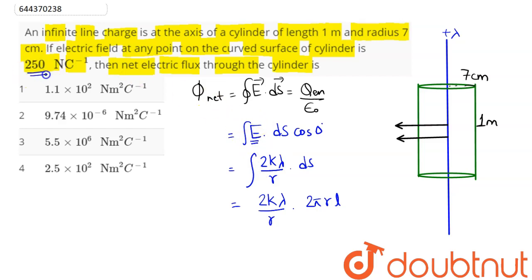This electric field is given, we need to find the net flux. So, this 2k lambda by r value is 250 into 2 pi into radius is given as 7 centimeter and length as 1 meter. So, 7 into 10 power minus 2 and length as 1 meter.